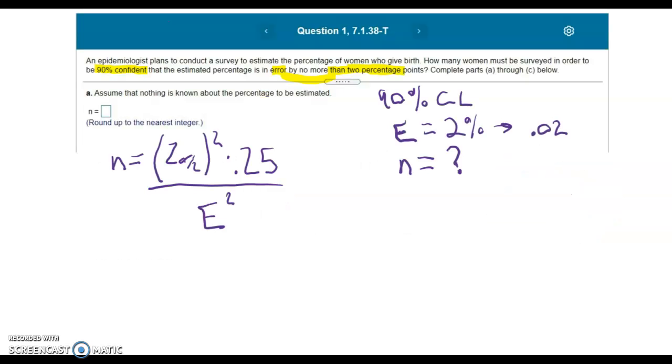In this formula, we can see that we're looking for N, our sample size. We know E is 0.02.